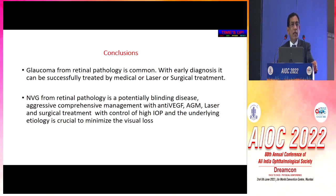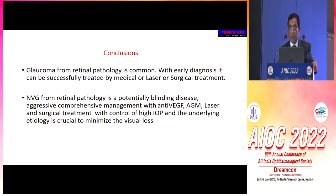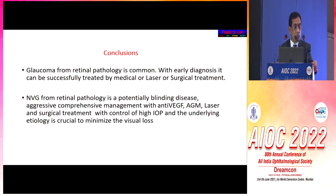In conclusion, glaucoma from retinal pathology is not uncommon. With early diagnosis, it can be successfully treated by medical, laser, or surgical treatment. Neovascular glaucoma from retinal pathology is a potentially blinding disease. Aggressive, comprehensive management with anti-VEGF, anti-glaucoma medication, laser, and surgical treatment — with control of high intraocular pressure and the underlying etiology — is crucial to minimize visual loss. Though this is refractory glaucoma, with appropriate treatment it is possible to give back vision to the patient. Thank you very much.